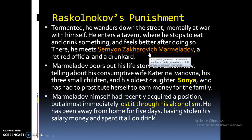Raskolnikov rises from his sick bed and fanatically reads the newspapers every day since the murder to know whether he is being looked for by the police. Memories of the murders begin to plague him. He discovers that the local police magistrate named Porfiry has begun to interview all of the pawnbroker's clients. Raskolnikov requests the return of his own pawned items, and his strange conversation with Porfiry only leads to more suspicion. Afterward, while preparing for Marmeladov's funeral, Raskolnikov and Sonya talk about religion and morality.